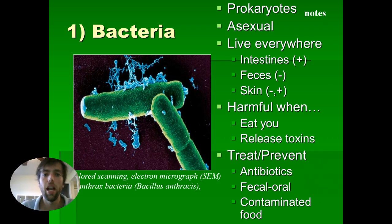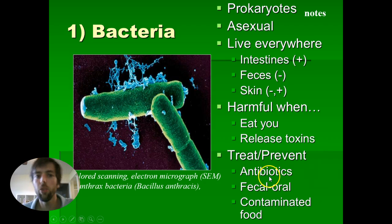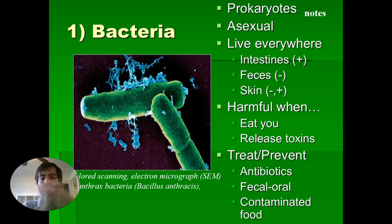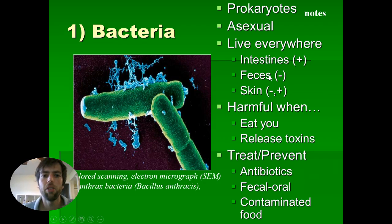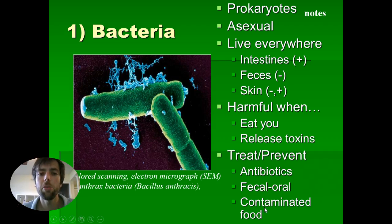But sometimes bad bacteria does move in. What bacteria do to harm us is they can eat us and they can release poison, known as toxins. So what we do when that happens is we can take antibiotics — anti meaning against, bio meaning life — so it's against bacteria and helps us kill them. The ways we can prevent it: wash your hands really well every time you go to the bathroom, because you do not want to re-ingest bad fecal bacteria. Also be careful about the food you eat, because sometimes food can be contaminated with bad bacteria, and that's how you get sick.